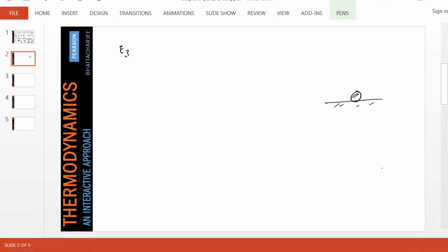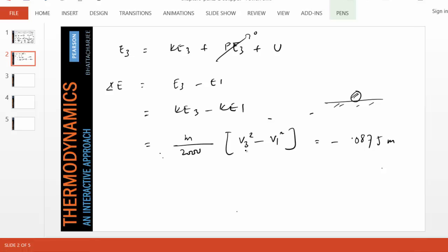And so therefore, E3 is the final energy. U doesn't change. There is no PE3 because Z equals zero. So therefore, the change in energy ΔE is E3 minus E1, which simply becomes the difference in the kinetic energy. And you can show that that will be M by 2000 into V3 squared minus V1 squared, which you can calculate: negative 0.875 times M, where V1 is given to be 15 and V3 is given to be 20. So this is so many kilojoules as a change in kinetic energy.